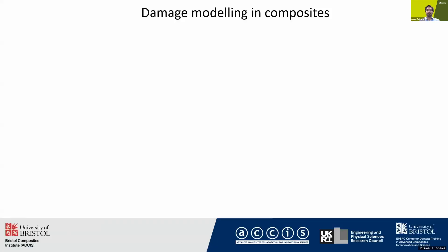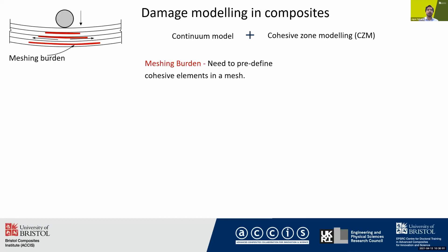Damage modeling in composites involves modeling the failure mechanisms such as fiber failure, transverse matrix cracking, and delamination. This is achieved with energy-based approaches such as cohesive zone modeling, which is introduced by pre-inserting cohesive elements in a mesh. However, in a thick composite structure with multiple plies, this causes a meshing burden.